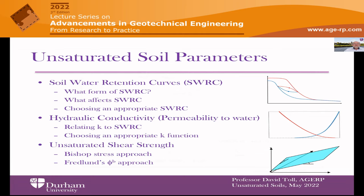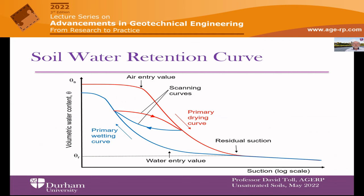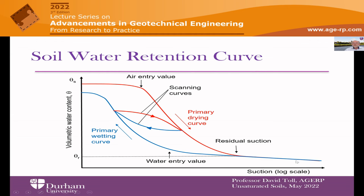Let's start with the soil water retention curve, often called the soil water characteristic curve. We're familiar with this in terms of it providing the relationship between volumetric water content — or some other measure of water content — and suction. This relationship is highly hysteretic: if we start from a saturated state and dry out the soil, we'll follow a primary drying curve until we get up into the residual suction zone.